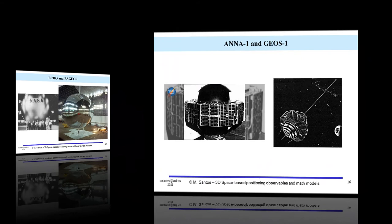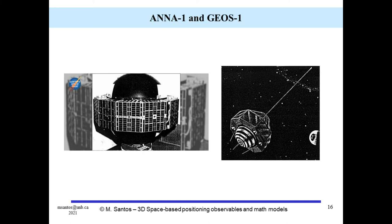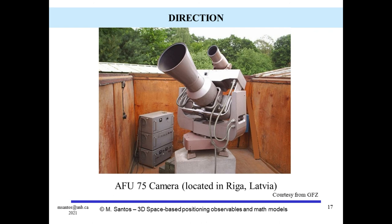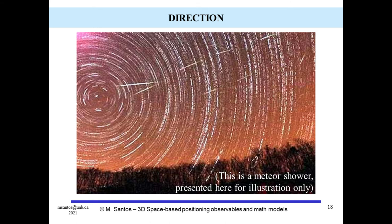Active satellites, capable of emitting a series of 628 flashes of about one millisecond length, were used — namely the ANA-1, GEOS-1, and GEOS-2 satellites. The Soviets also invested in direction to satellite by establishing their own network using their own cameras, such as the AFU-75 camera shown in the image.